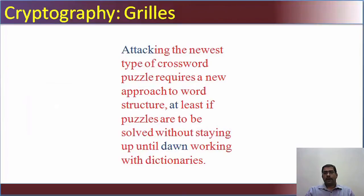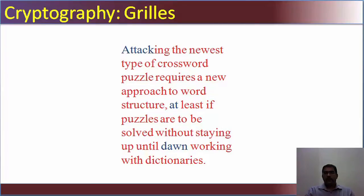Here is a simple example of grilles. The message is 'attack at dawn.' It is written in such a way that only the sender and receiver know where the letters or words have to be read. If you see, 'attack at dawn' can be read by both the sender and receiver, but for any other person reading this it just appears to be a simple sentence or paragraph.